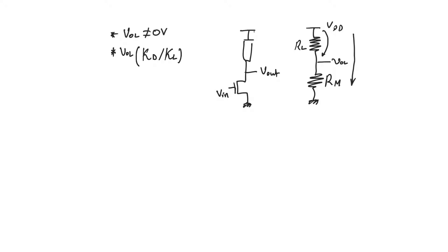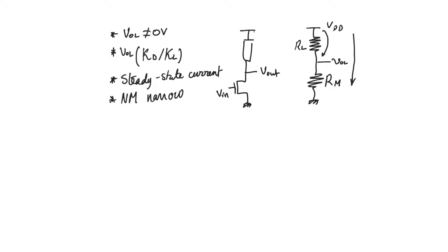We don't want the output values to be functions of transistor sizes. The fact that we have a non-ideal output value is because we have steady-state current, which also causes static power dissipation. The final problem with ratioed logic families, especially the enhancement load family, is that noise margins are very narrow because a lot of headroom is wasted, and the slope of the voltage transfer characteristic is not high.